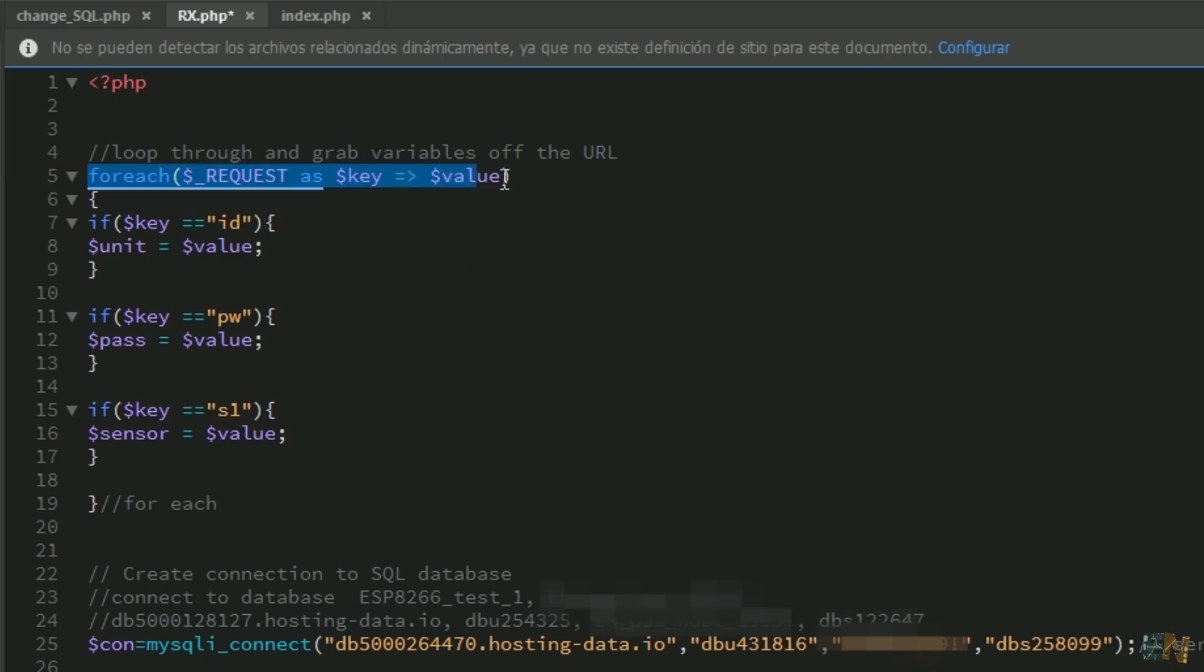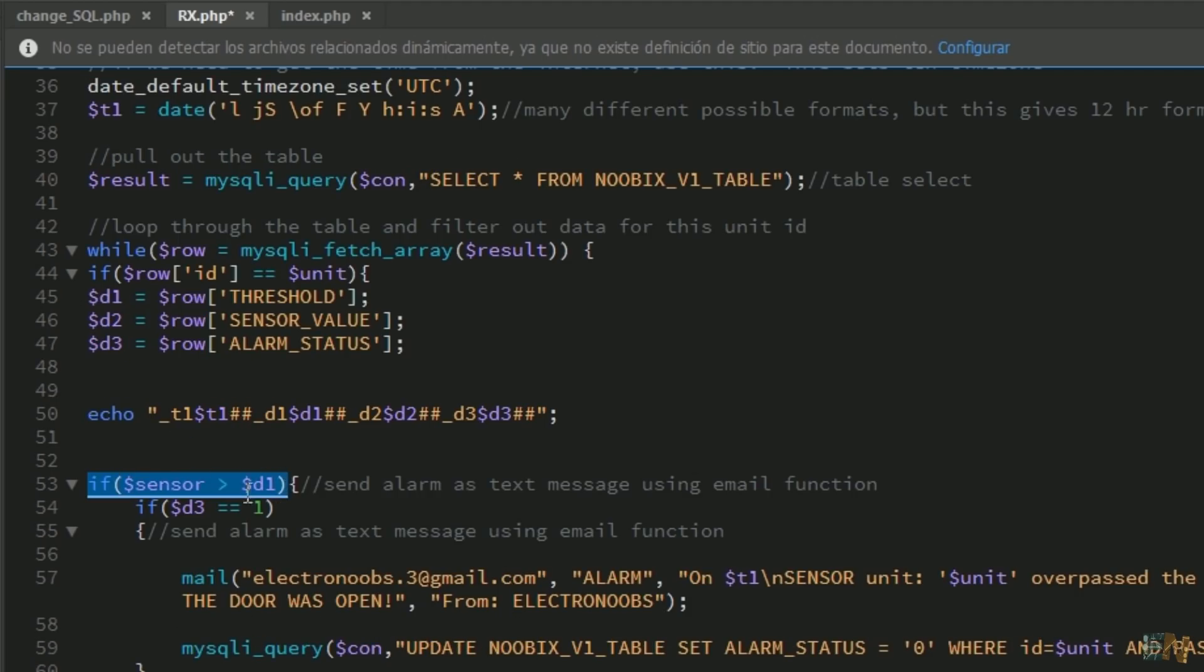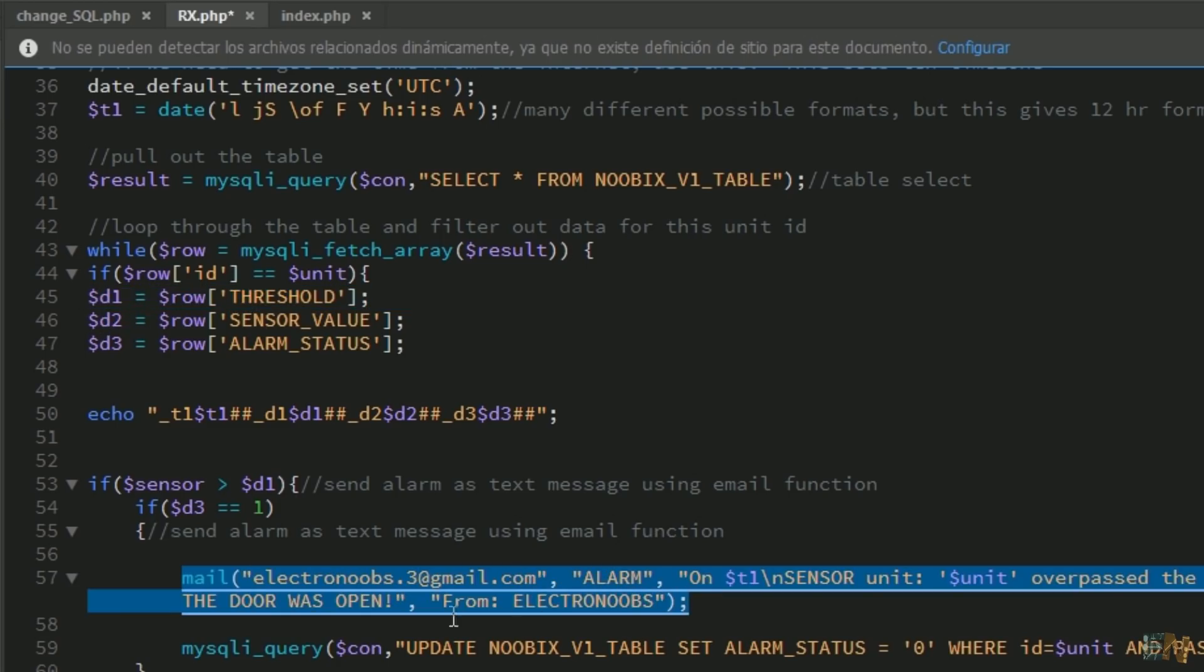The rx.php file receives the URL and divides it into the unit, password, and sensor. Then if the sensor value is higher than d1, which in this case d1 is equal to the threshold value, then we send an email to this address. So remember to change this email address to your email. Now everything should work. Let's see an example once again.